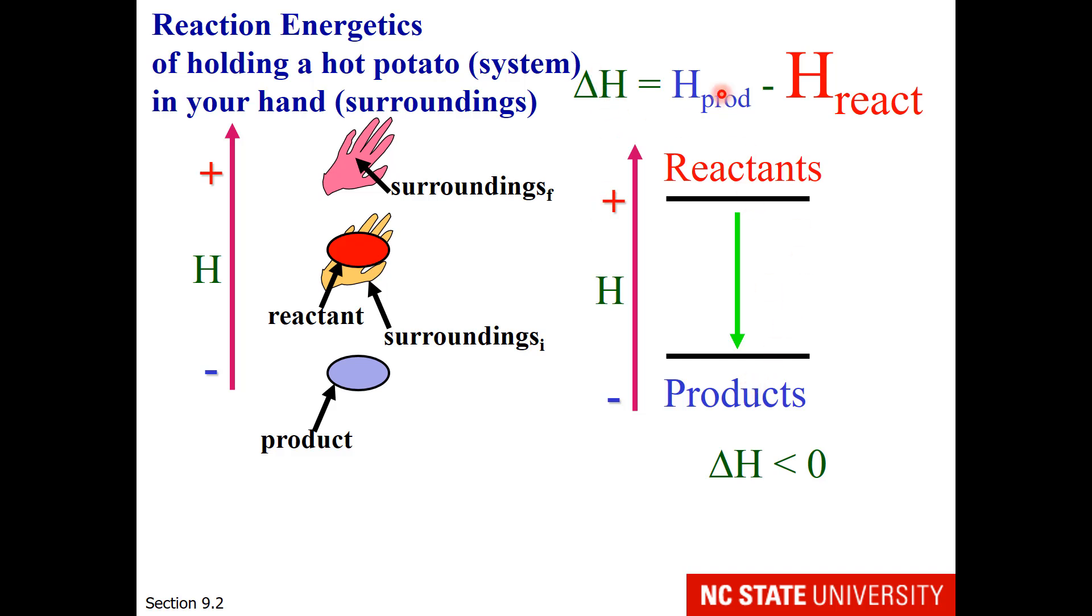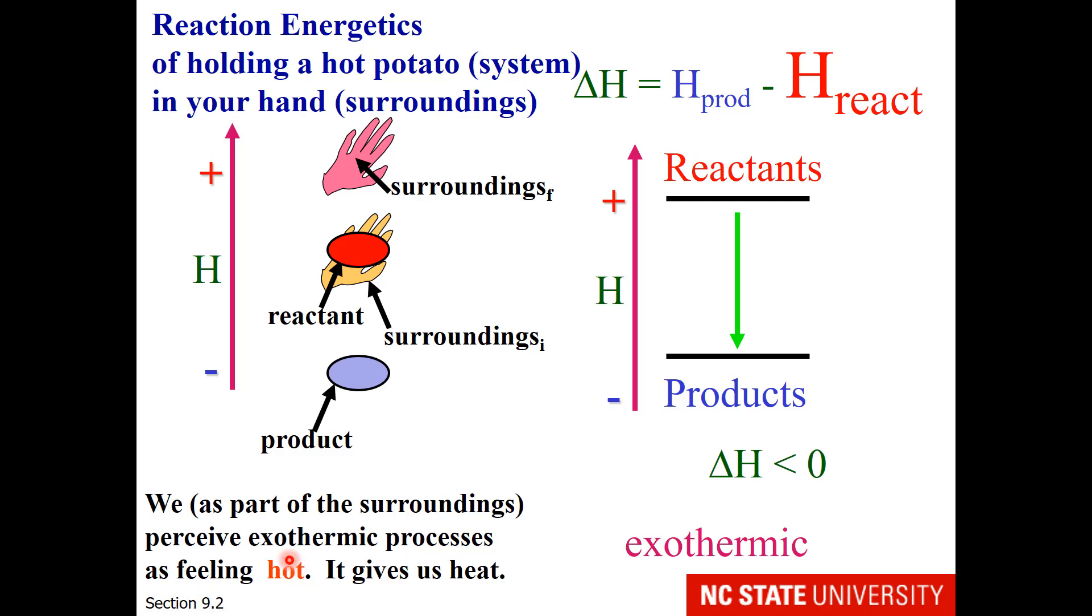So if we look at the delta H, we have lower energy products minus higher energy reactants. That enthalpy change will result in a negative value, and we call that exothermic, because the hot potato lost heat. So exothermic reactions have a delta H that is negative. Now how do exothermic reactions feel to the surroundings? They feel hot, because the surroundings are accepting the heat.